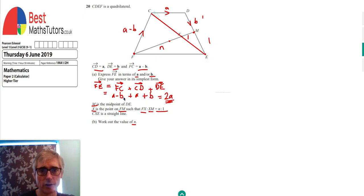The first thing we're going to do is look at the whole line CE and try to find what that is. CE can be found by CD plus DE. That's fairly straightforward because CD is A and DE is B. So that's CE.